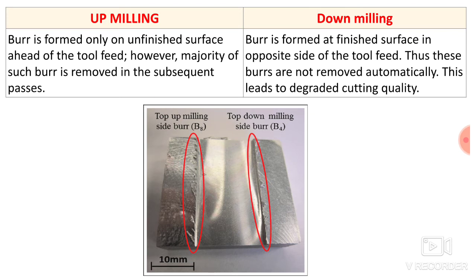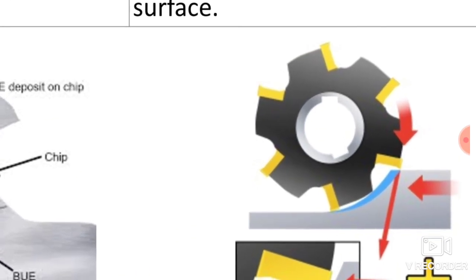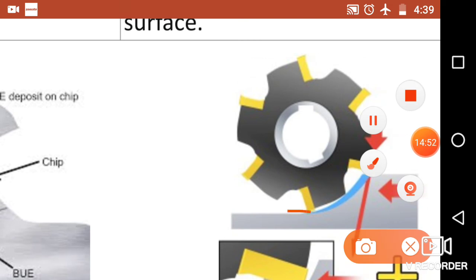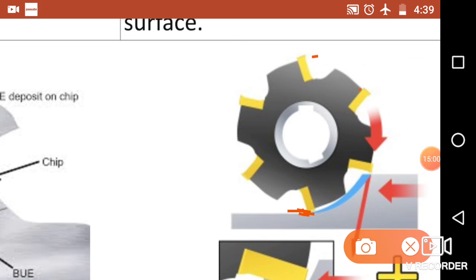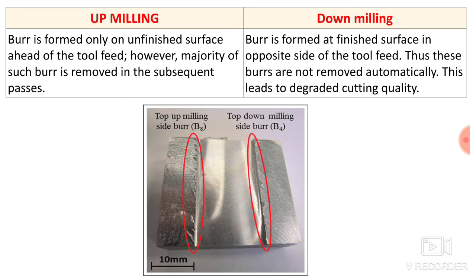In down milling, burr is formed at the finished surface on the opposite side of the tool feed. Thus these burrs are not removed automatically, which leads to degraded cutting quality. The insert does not come in contact with the machined surface to remove the burr — it only contacts the unmachined surface — so the burr remains on the machined surface and degrades the workpiece quality. You have to remove that burr manually.